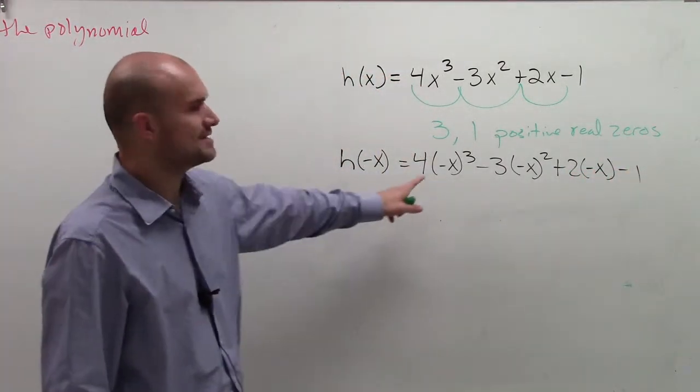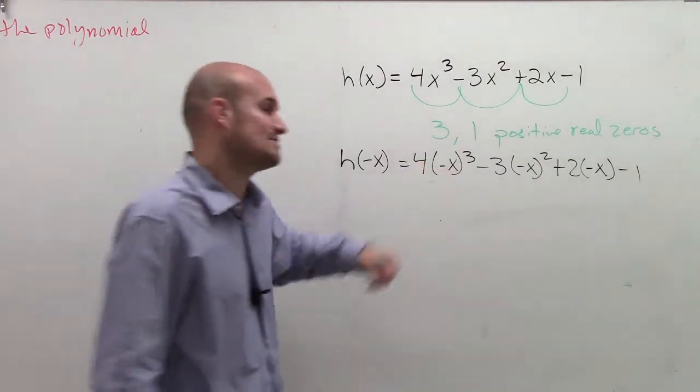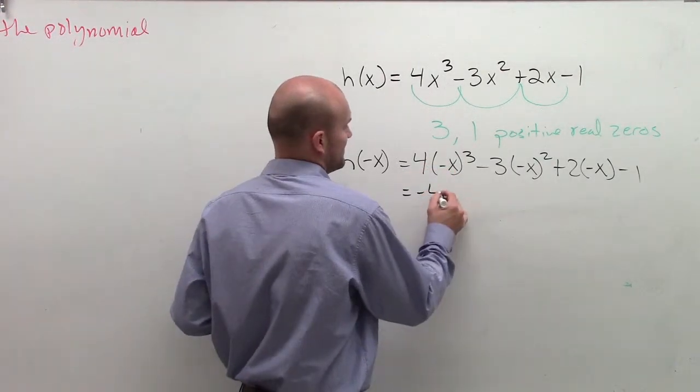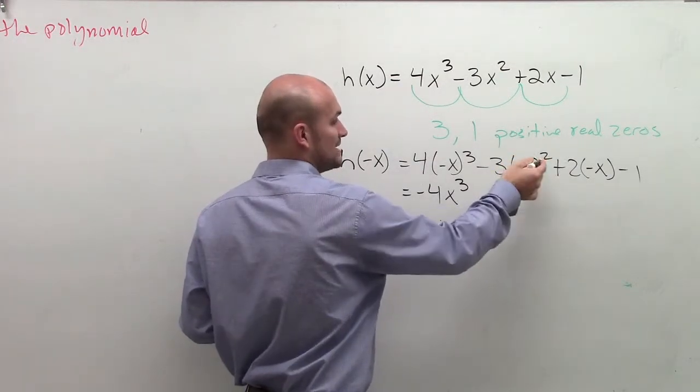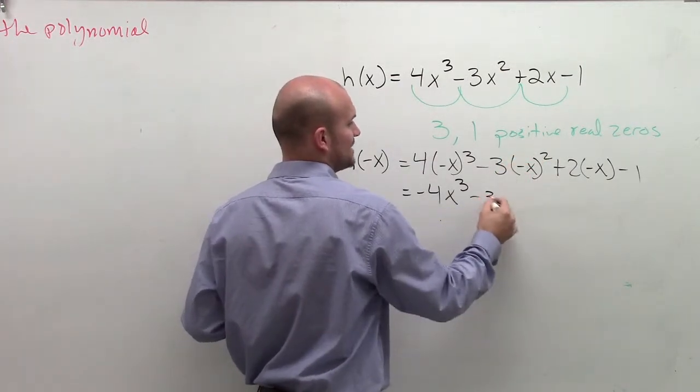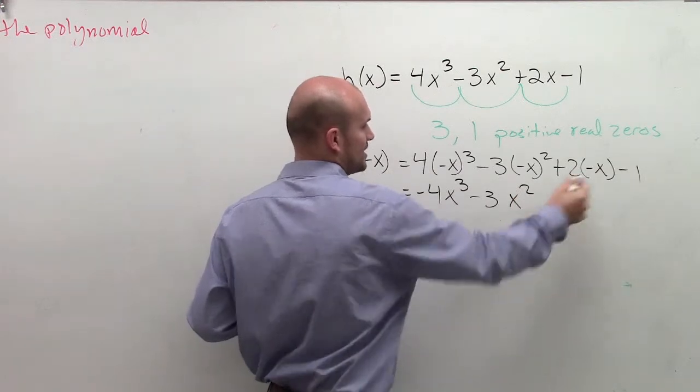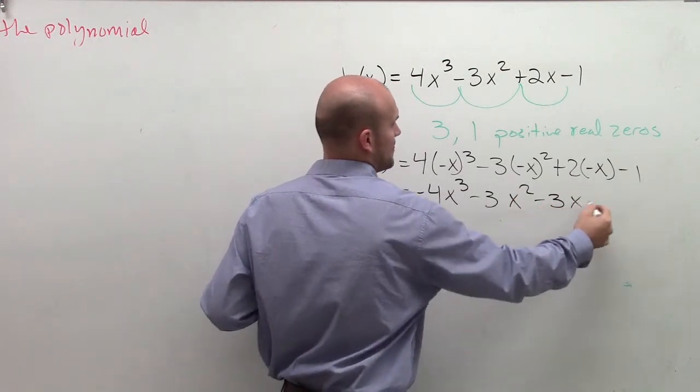So I'm doing a problem like this. When I have negative x raised to any odd powers, you're going to keep it negative. So I have negative 4x³. Negative x squared is going to be positive. Positive times negative. Negative 3x². This now turns to negative 2x minus 1.